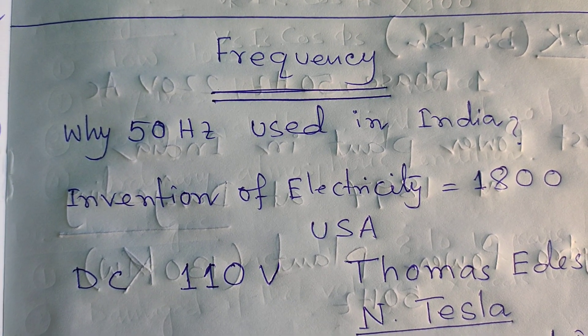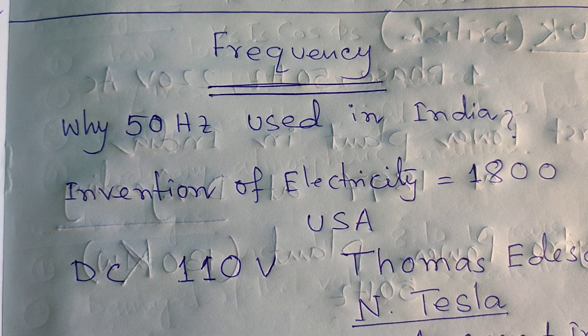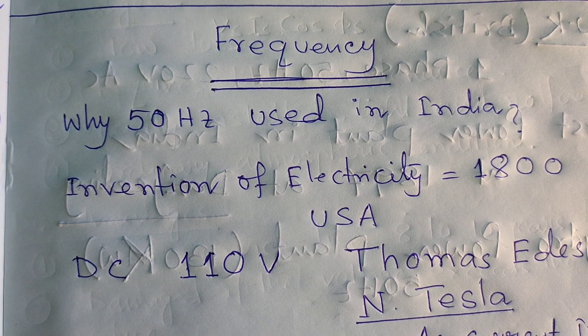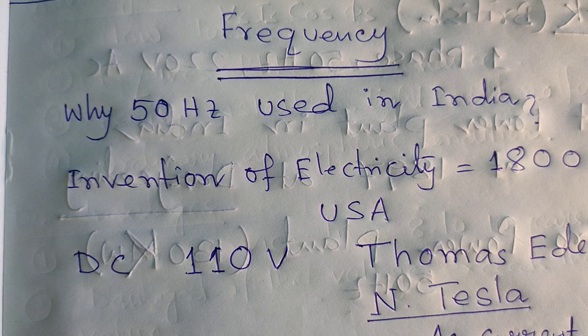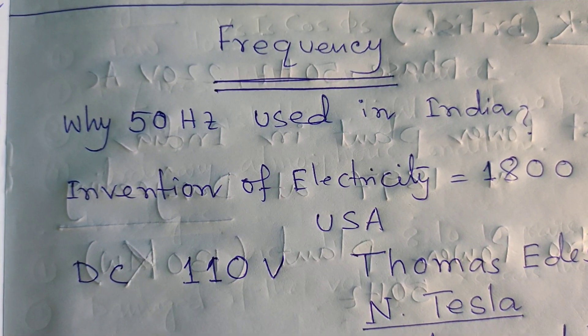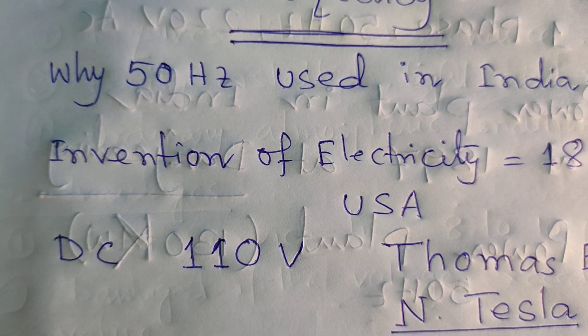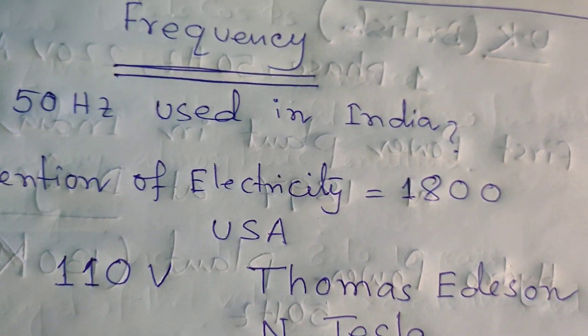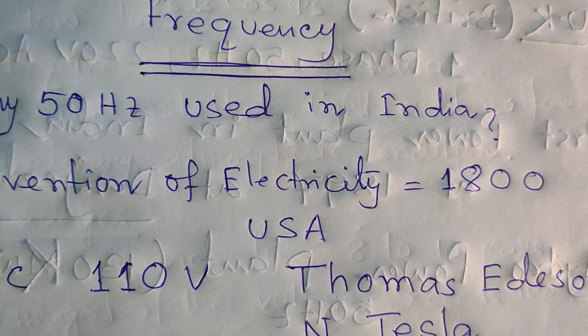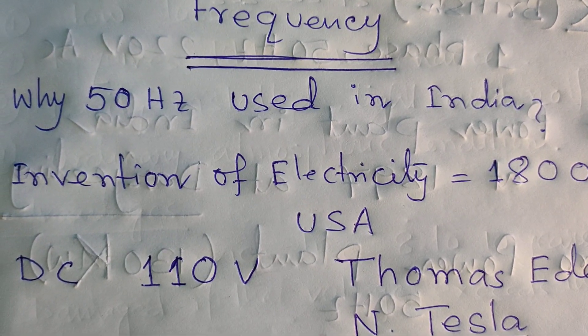Then DC 110 volt had been invented by Thomas Edison, and this invention of electricity is by Thomas Edison.